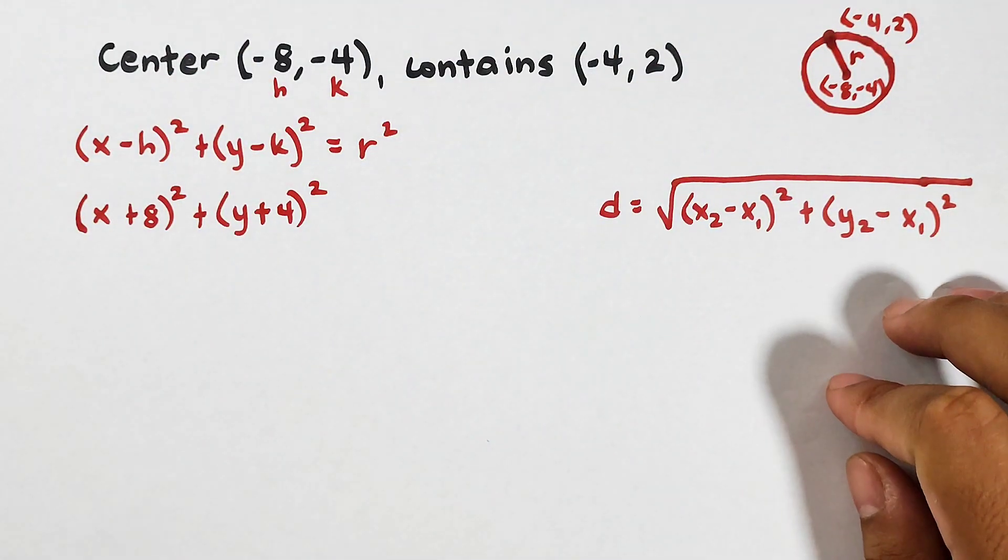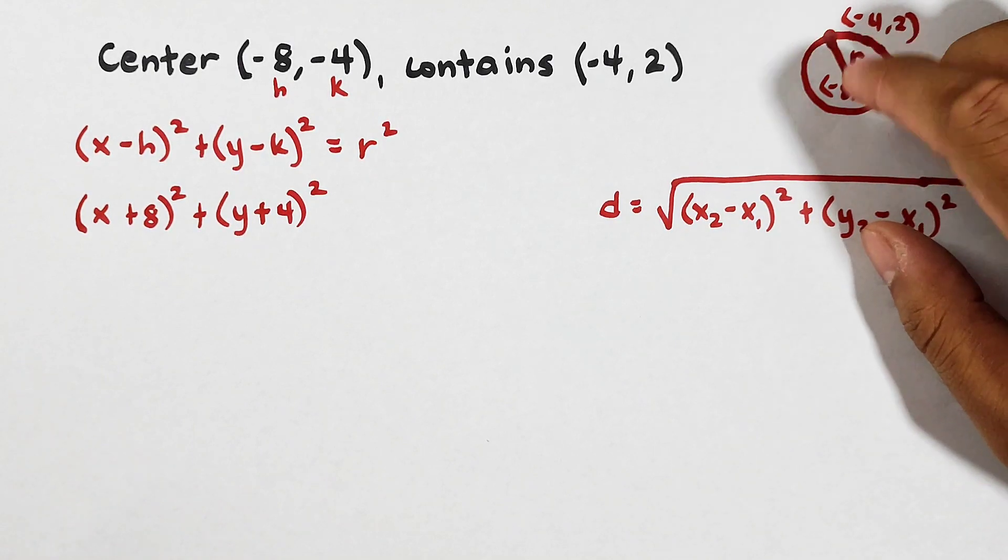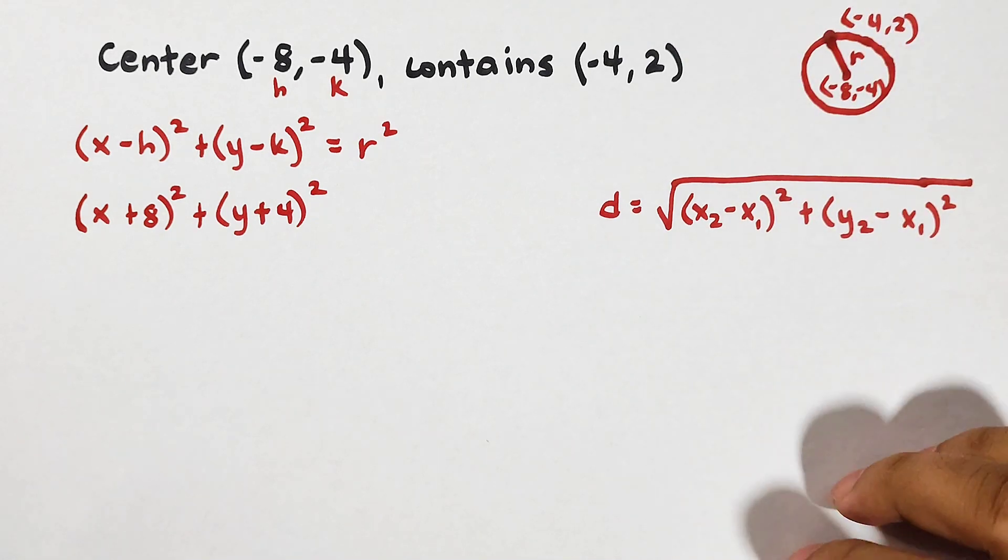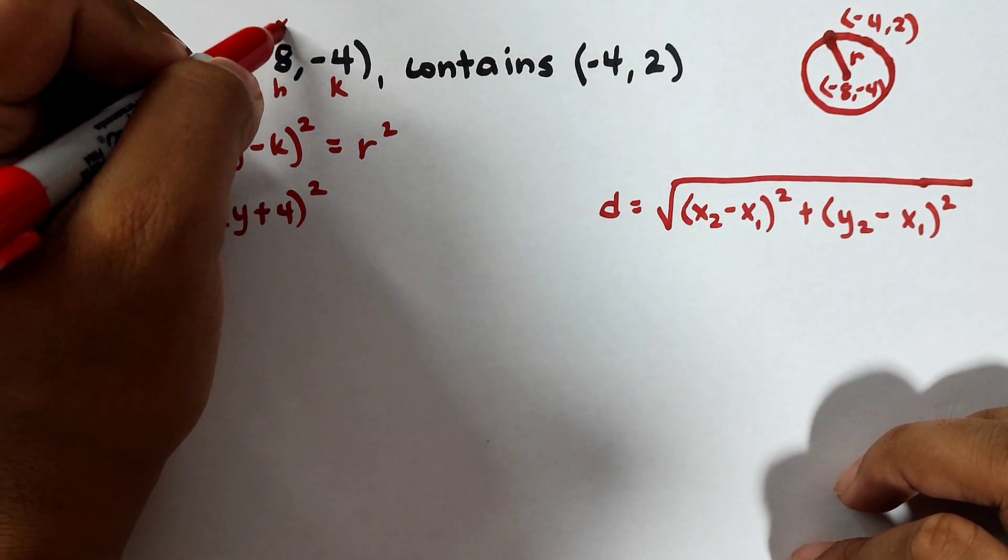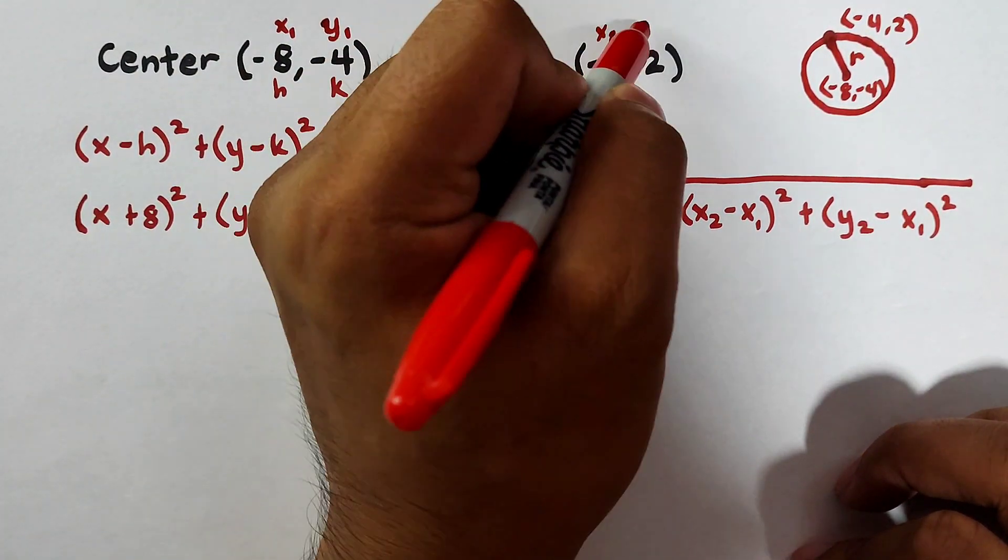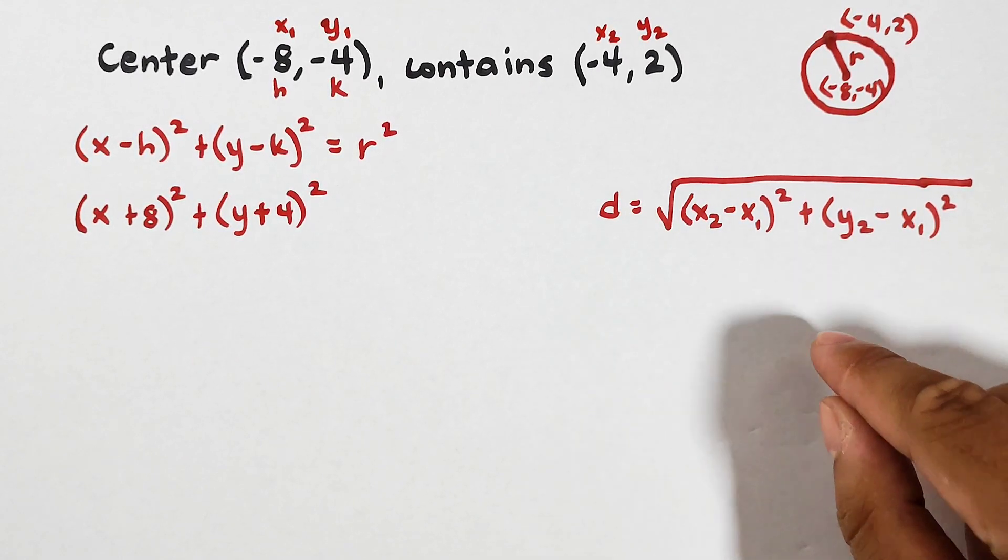When you connect these two points, it will serve as your radius. So to find the length of that radius, we need to calculate the distance between the point of your center and this point of the circle. So this will be x sub 1, y sub 1, x sub 2, y sub 2. Okay? Let's put it in the formula.